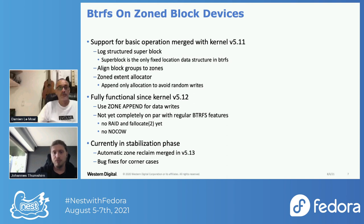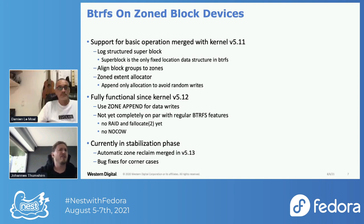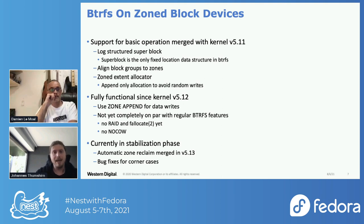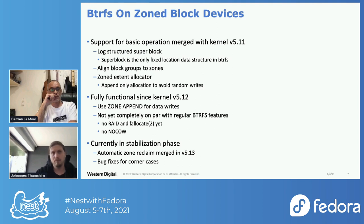Next, we had to align the block groups to the actual zones and write a zone extent allocator that does append-only allocation to avoid random writes within a zone. Then starting with kernel 5.12, we are fully functional - we use zone append for all data writes and we are able to mount the file system. What's not yet working is RAID support or RAID at all yet, but there are plans. And there is no support for the no-COW mount option because that simply won't work with zone devices.